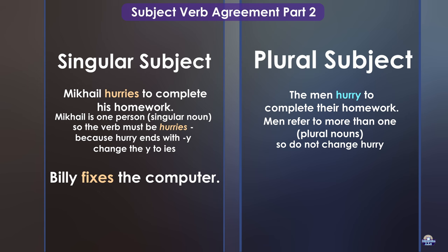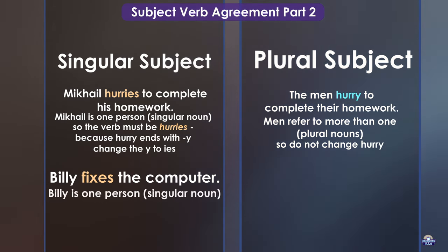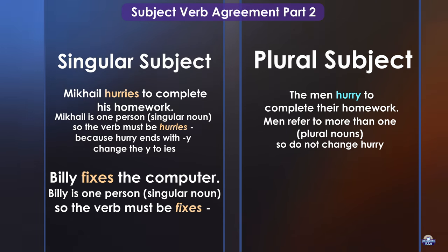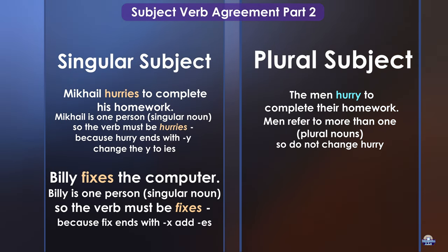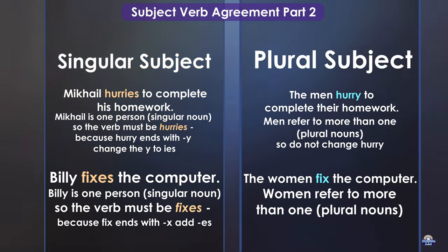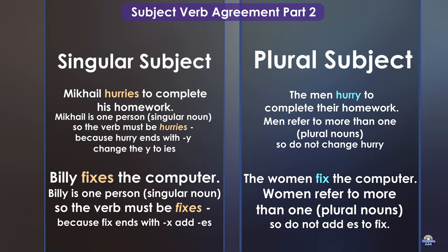Billy fixes the computer. Billy is one person, a singular noun, so the verb must be fixes. Because fix ends with X, we add ES. The women fix the computer. Women refer to more than one — plural nouns — so do not add ES to fix.